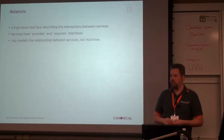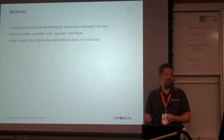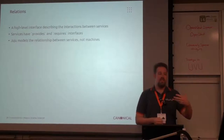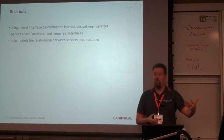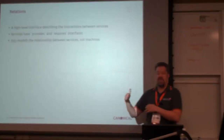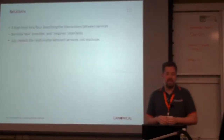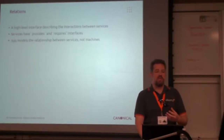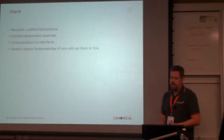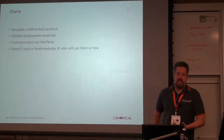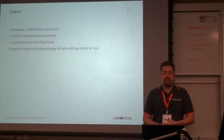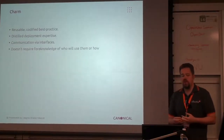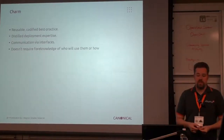There are going to be high-level interfaces that describe the interaction between the services. A great example is a DB interface — a database interface. You can say that you need a database interface, a generic one, and then require the charm to understand how to talk to it. They have provides and requires interfaces. Juju models the relationships between the services, not the machines. A charm is DevOps distilled — it's reusable, codified best practices. The communication happens between the interfaces, and it doesn't require more knowledge of who's going to use it.